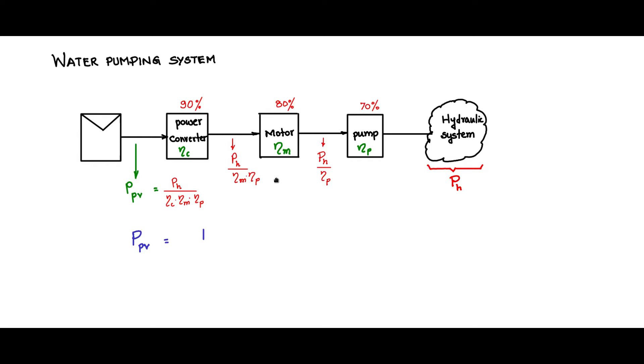Now PPV will be pH by 0.9, 0.8, 0.7, and if you calculate all this, it is 2 times pH. So whatever hydraulic power you calculate, when you size the PV panel, it should be twice the hydraulic power that you calculated.